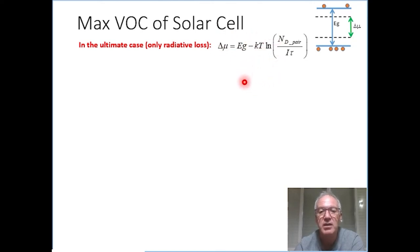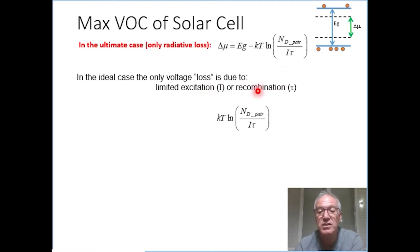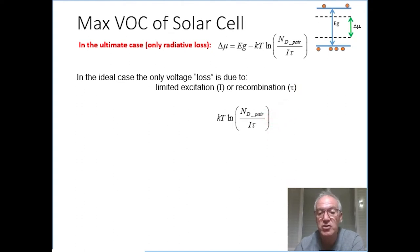And as we said, in the ideal case the only loss is because we have a finite excitation I and there is always a recombination lifetime tau, which in the ideal case is dictated only by radiative recombination.